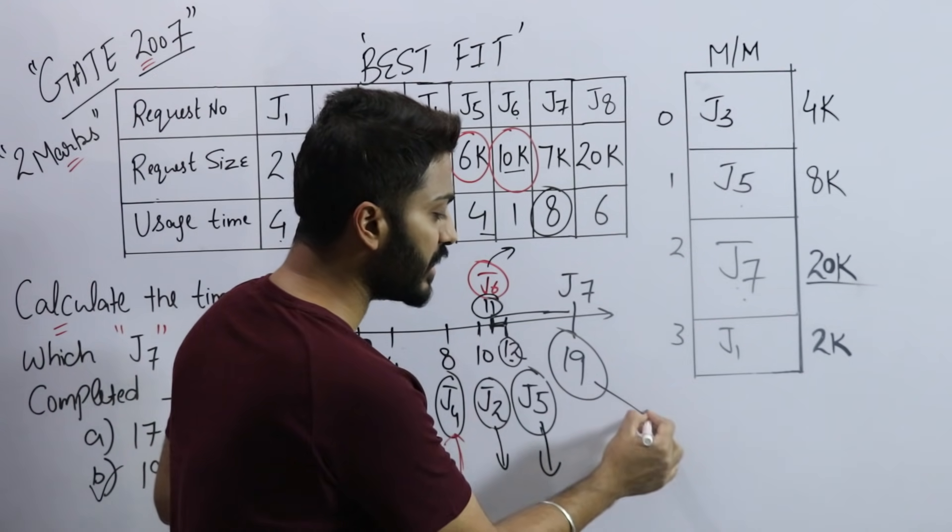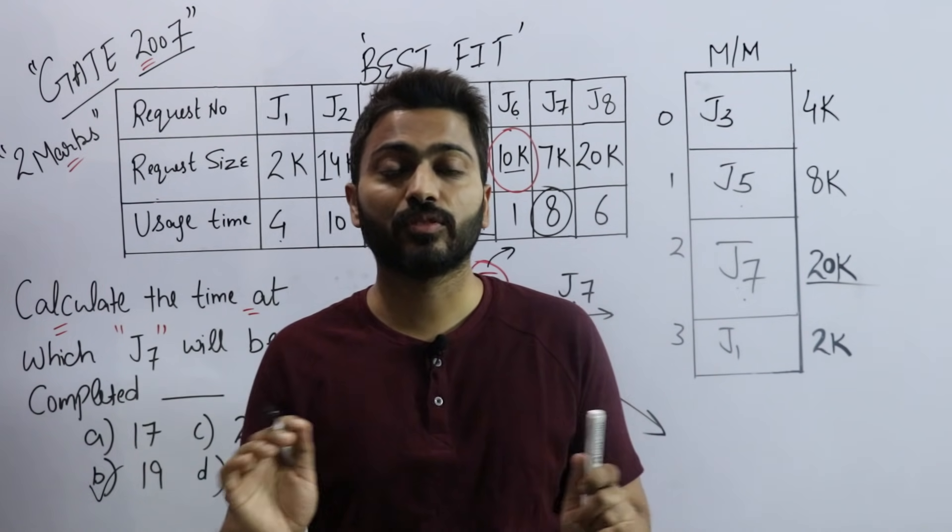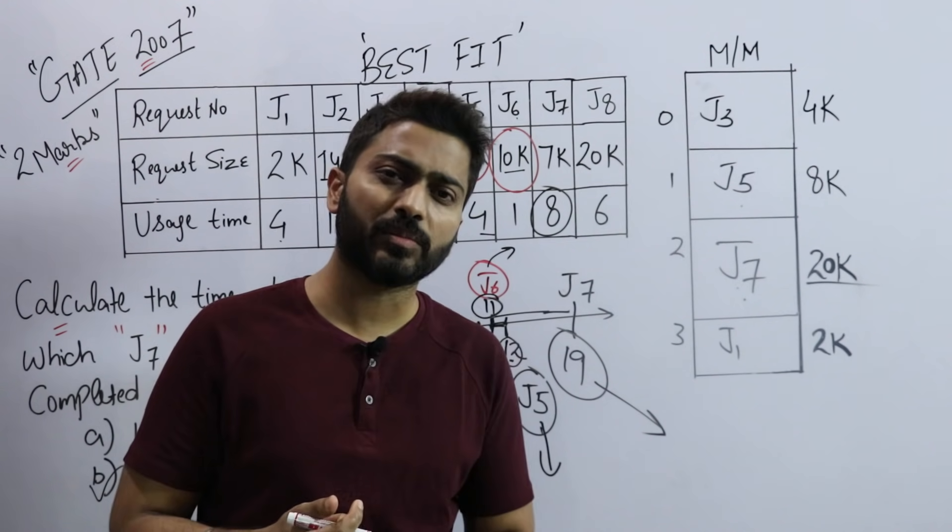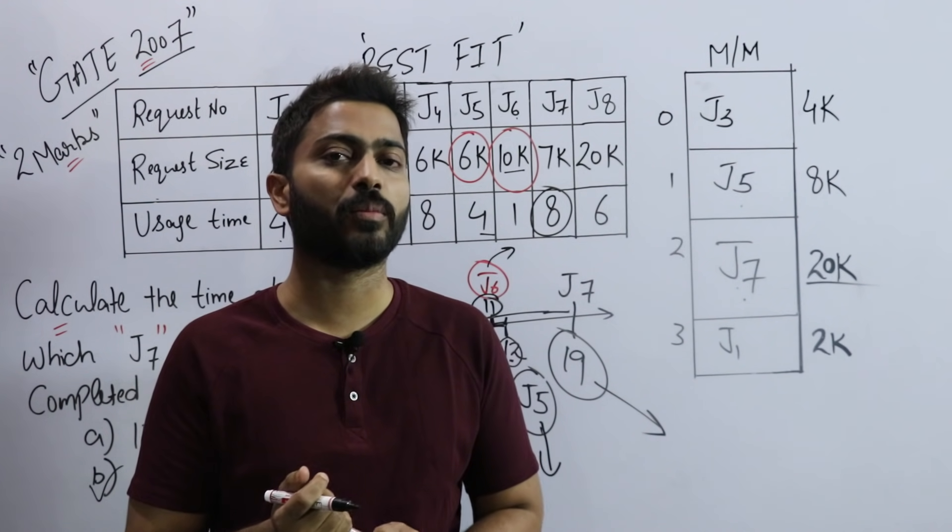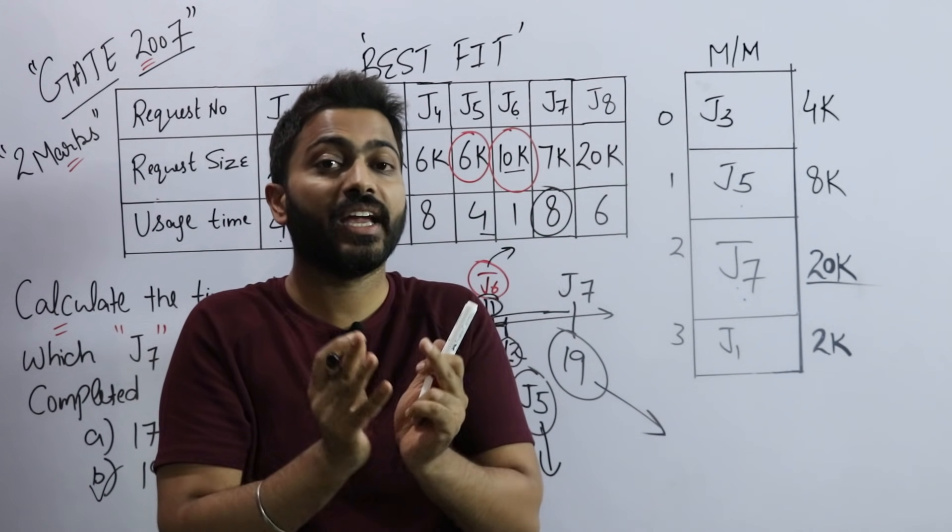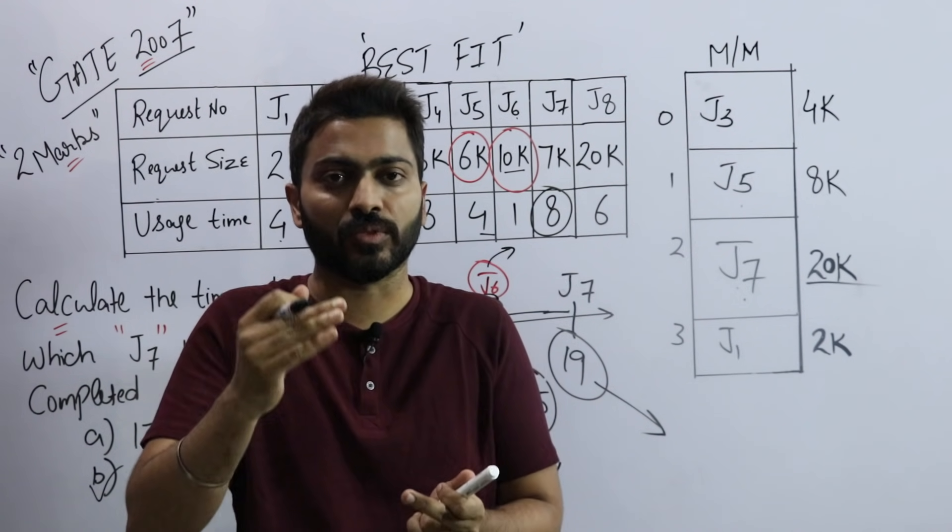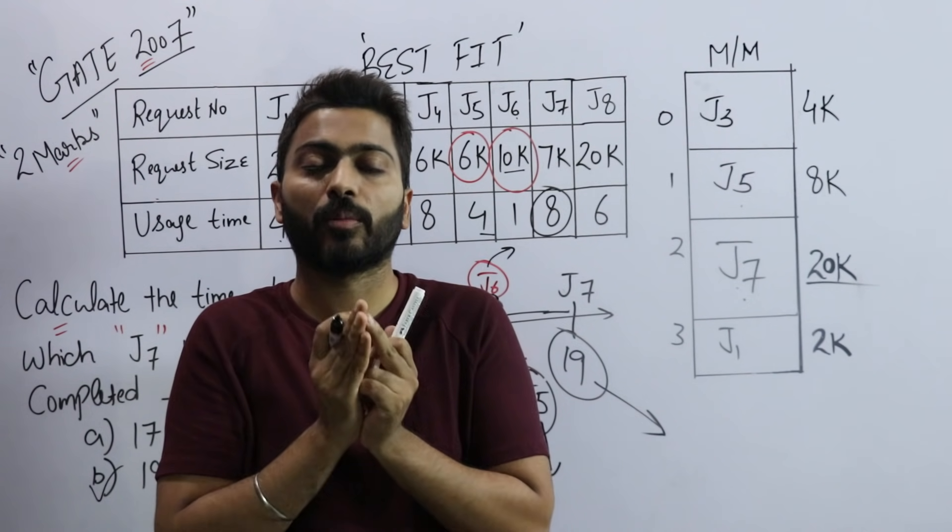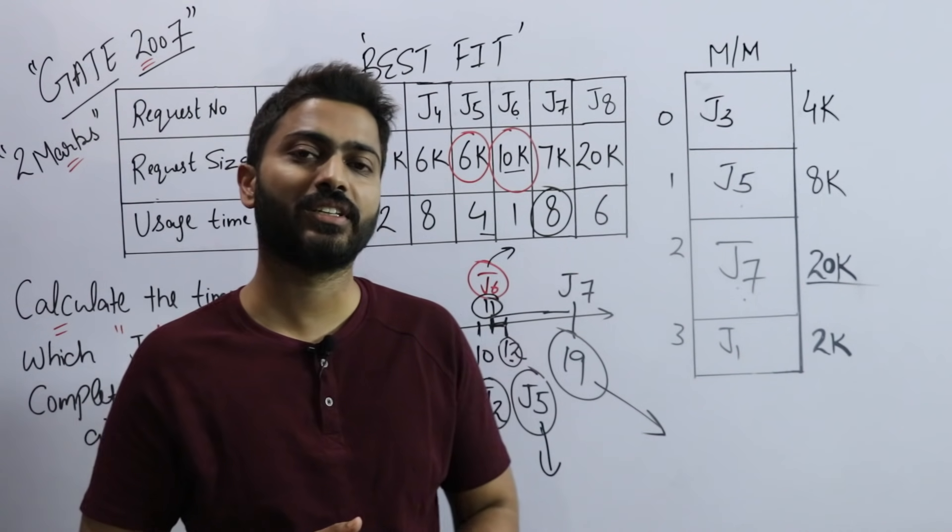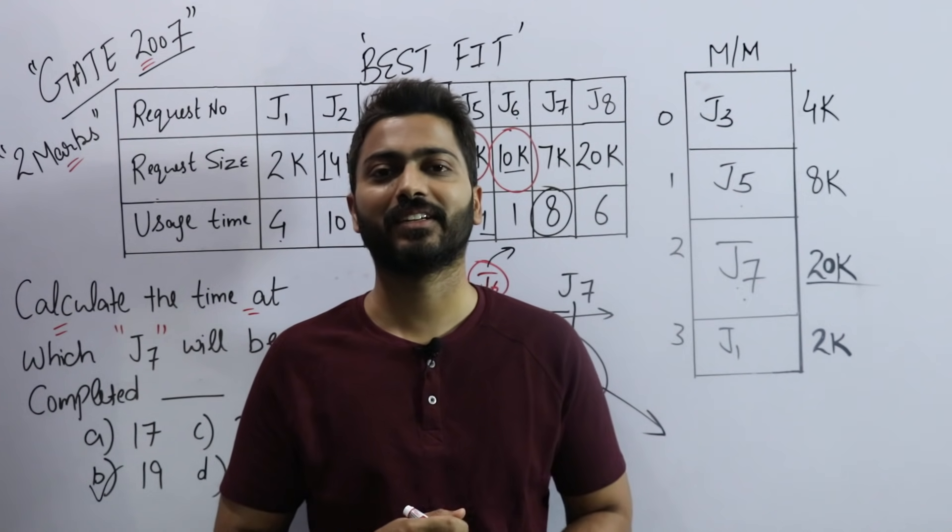But the trick here is not to wait for 1 second until 12 comes to do best fit according to internal fragmentation. J7 will work from time 11 for 8 time units, so 11 plus 8 equals 19. At time 19, it will exit from here, meaning its work is complete. So the answer will be B. This is all about how you have to solve tricky questions in GATE. Sometimes questions are simple, sometimes tricky. Your way of thinking has to be a little extra. Try to read concepts broadly and practice as many questions as possible.